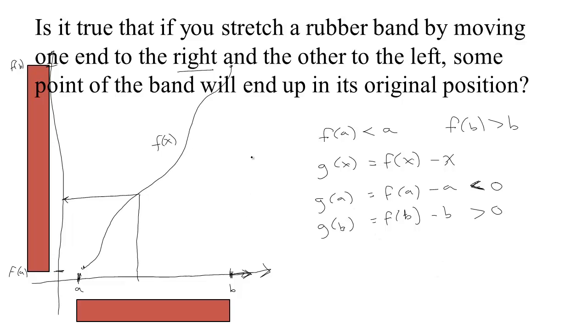So, assuming that the stretching of this rubber band was continuous, then the Intermediate Value Theorem says there is a C, so we could say by the IVT, the Intermediate Value Theorem,